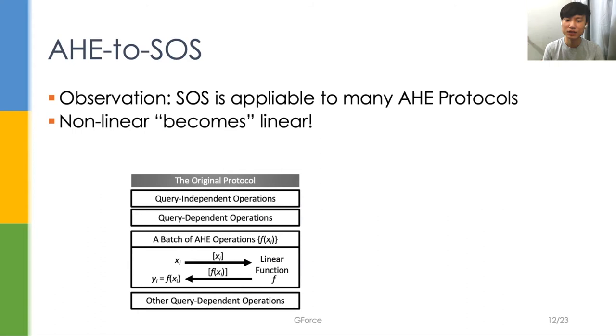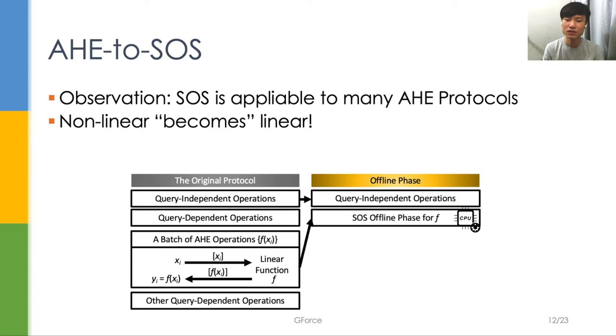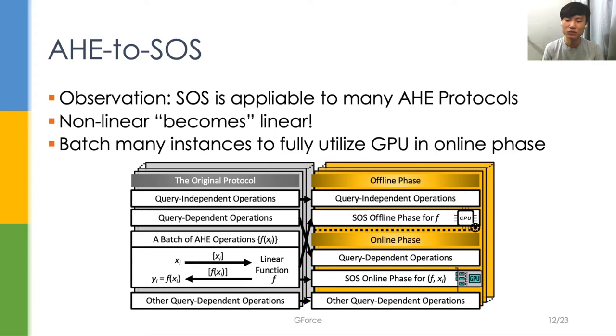Secure comparison using DGK protocol is slow because it relies on AHE. Yet, we have another observation that secure online offline share computation is applicable to many AHE protocols, including DGK protocol. Our main idea is to decompose the nonlinear operations into many linear operations and apply SOS on them. We run the SOS offline AHE computation on the CPU, and perform the SOS online computation on the GPU. Meanwhile, we batch many protocol instances together to fully utilize GPU's batch processing power in the online phase.